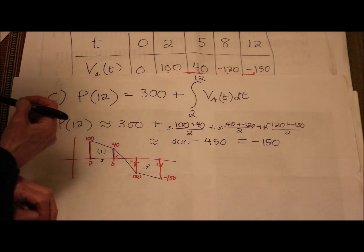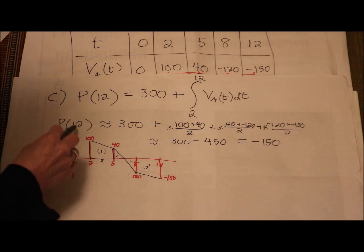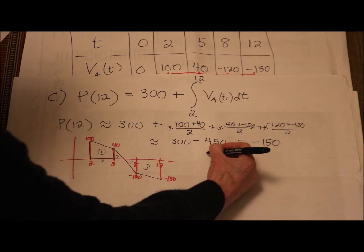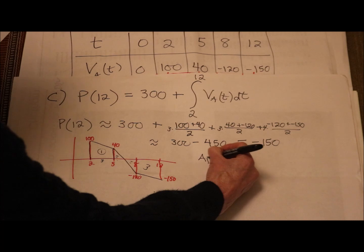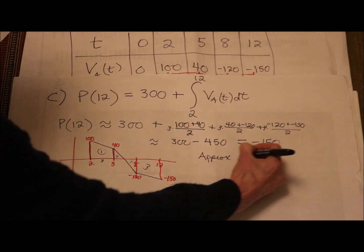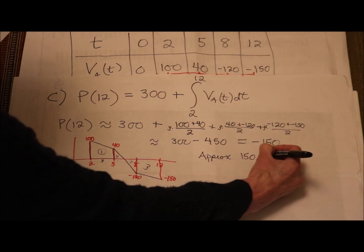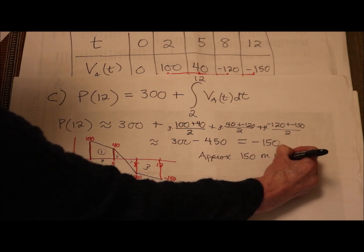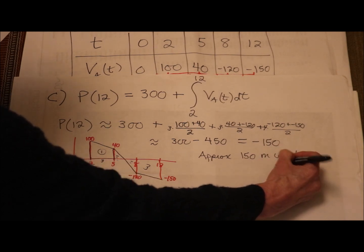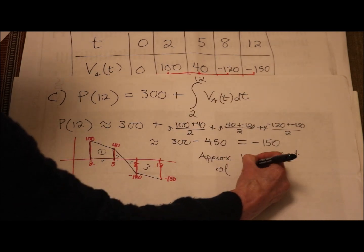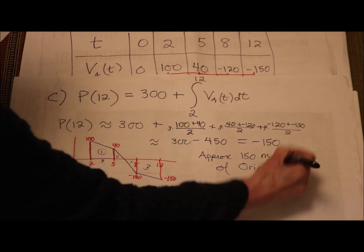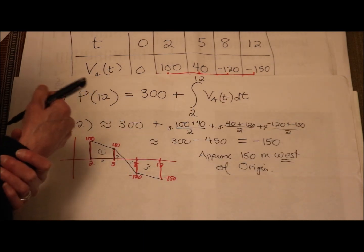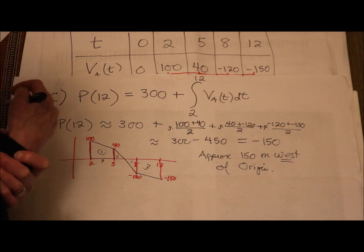So that means your approximation for your position. So the train at time, 12 minutes, is approximately 150 meters to the west, right? Because I'm going to the left, of the origin station. Obviously, origin station is at zero. All right. That was kind of fun, I think.